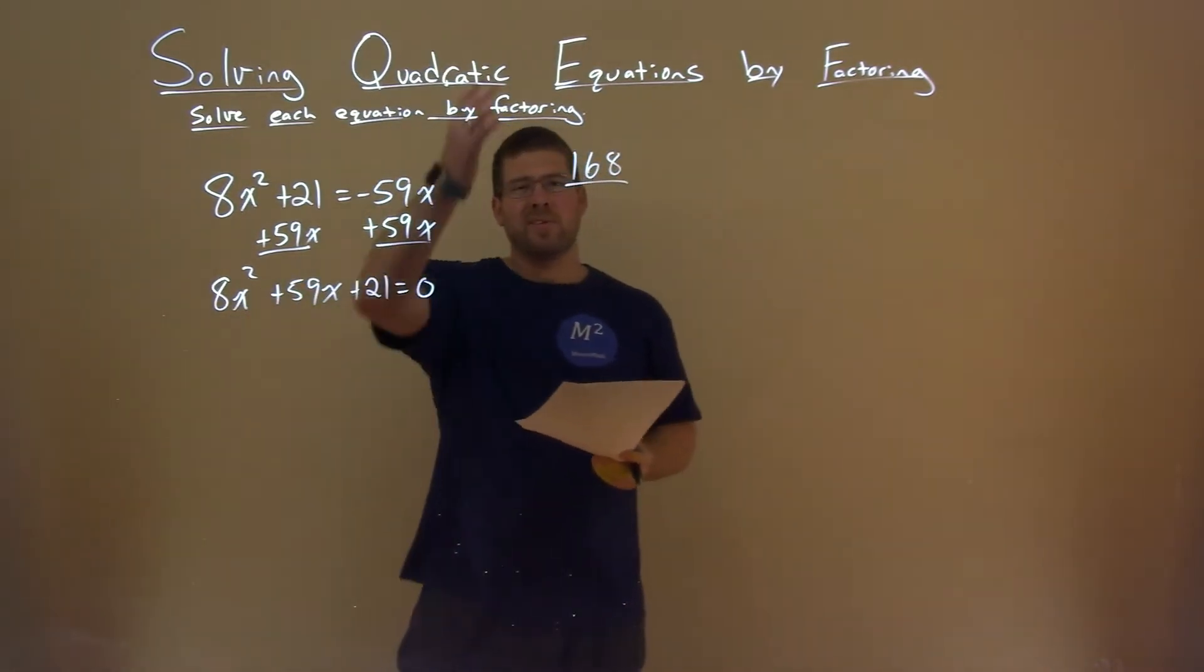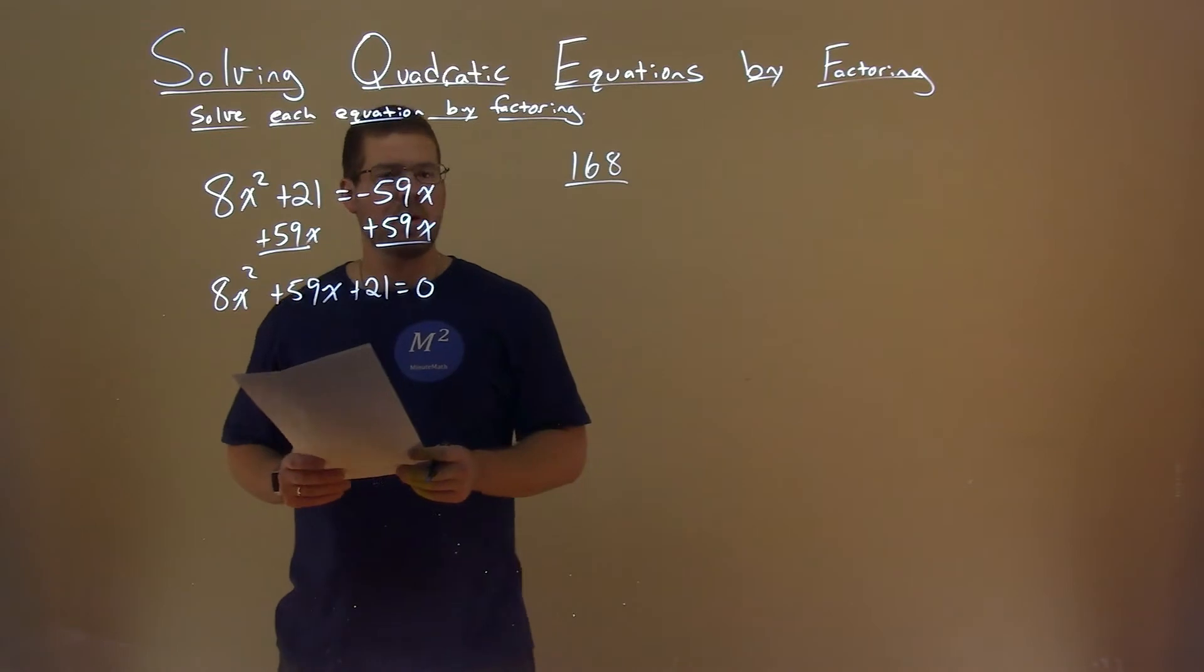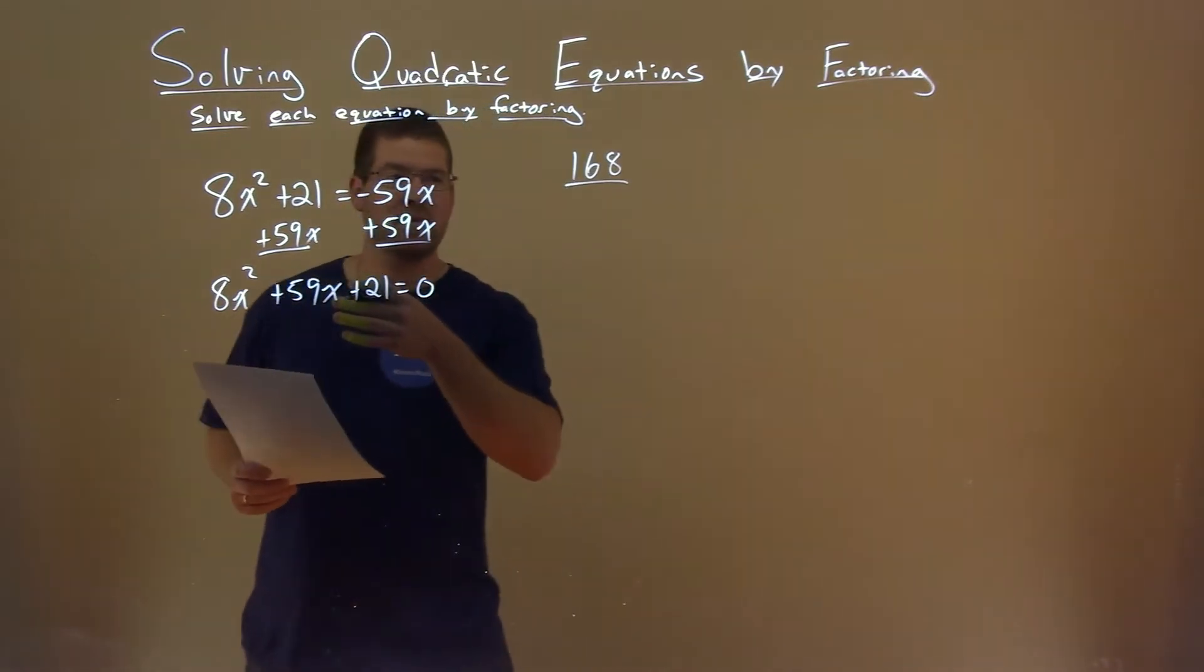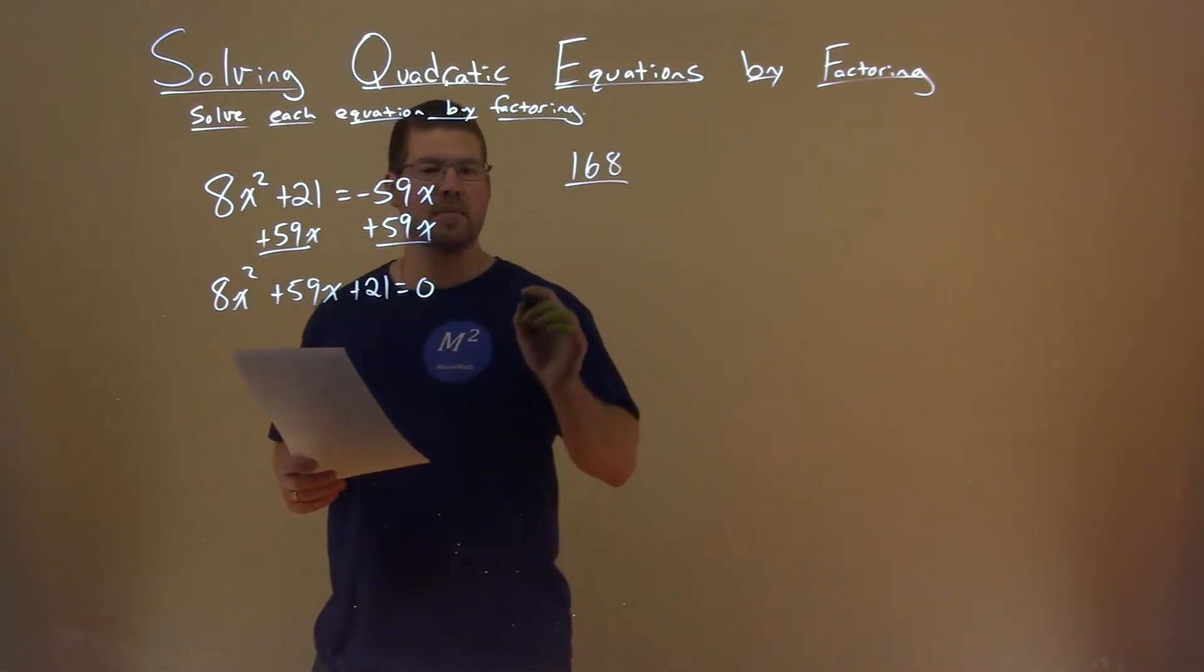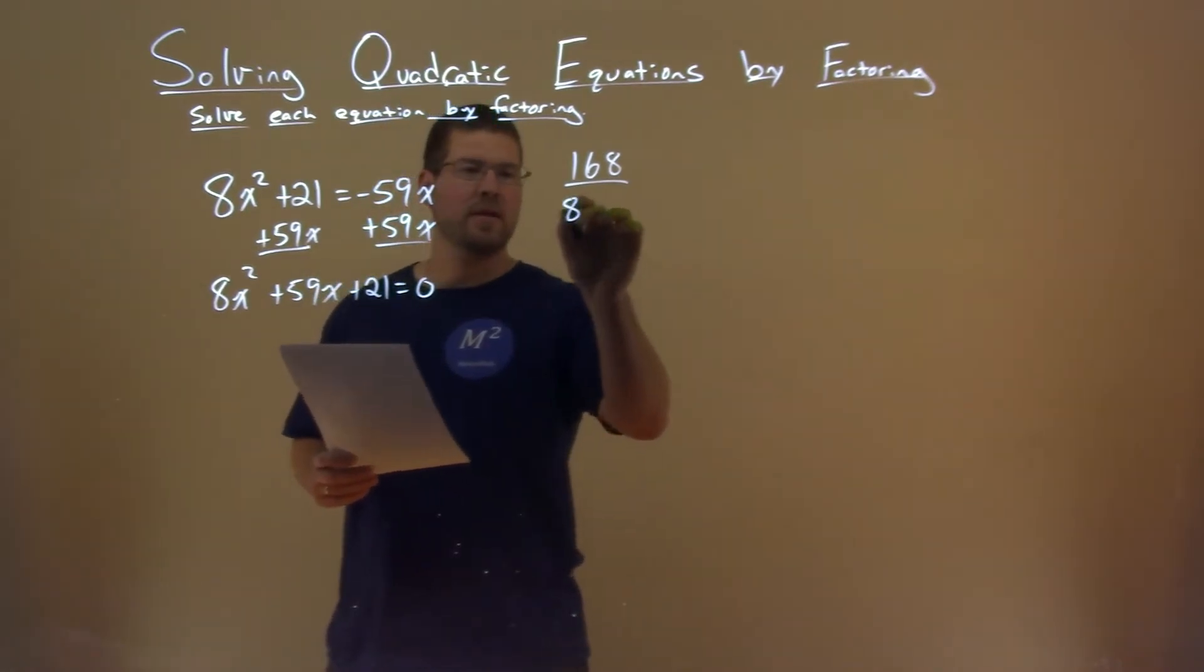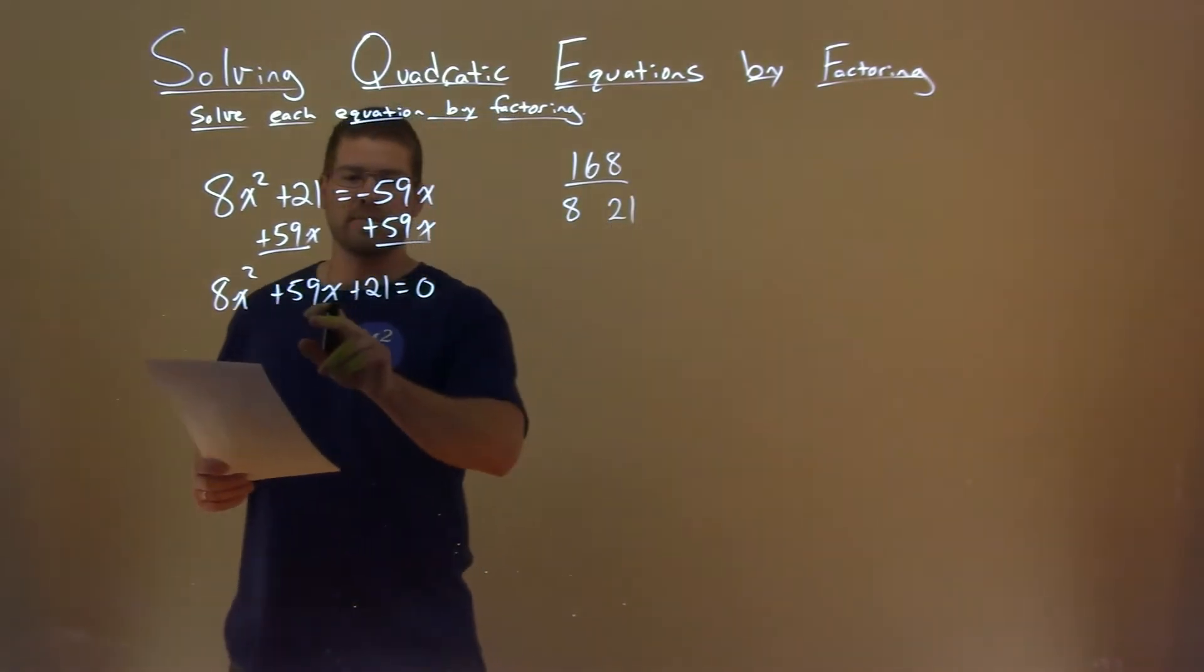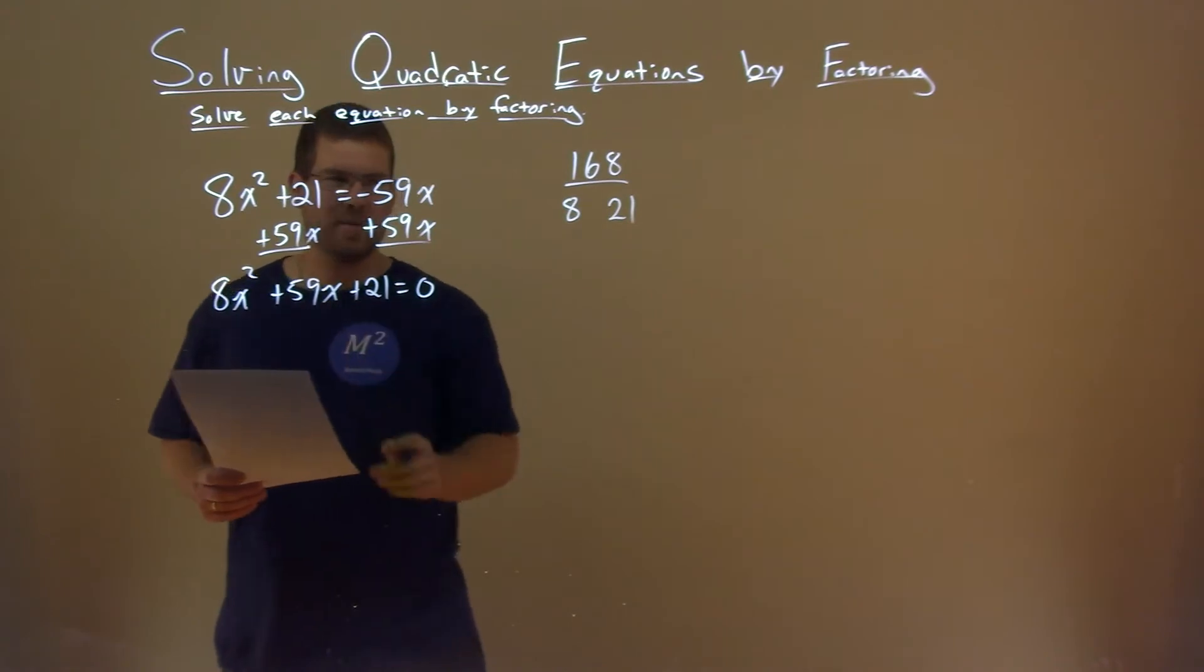So I'm not going to go through all the factors of 168, but I'm going to go through numbers that I know multiply to 168, and see if two of them add to be 59. Well, obviously 8 times 21 got me there, so 8 and 21. Well, that doesn't add to be 59.